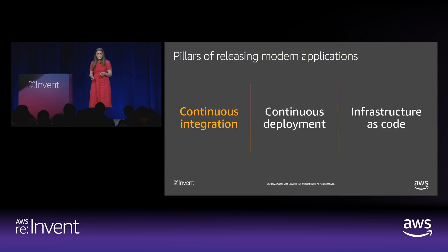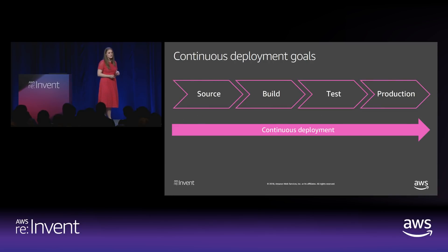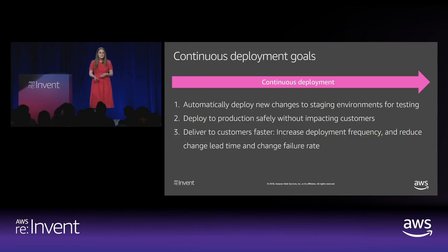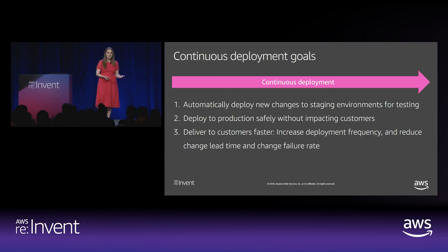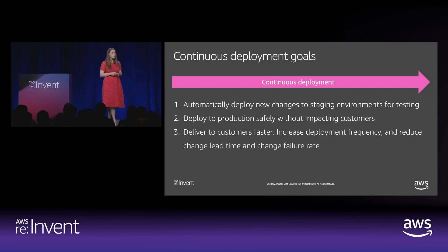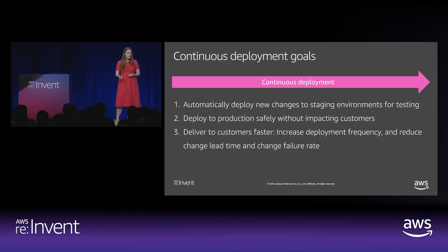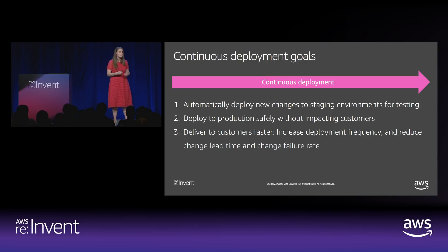Now let's look at continuous deployment. As a refresher, this is where source, build, test, and production are all completely automated. The goals of this pillar: number one is to automatically deploy new changes to staging environments for testing — in addition to all the continuous integration goals, we now need to deploy that artifact. Two is to deploy to production safely without impacting customers — there's a lot of fear around adopting continuous deployment, and we want each deployment to be as safe as possible without any person interacting with it. Three is to deliver to customers faster, where we really start to see those results in deployment lead time, frequency, and change failure rate.